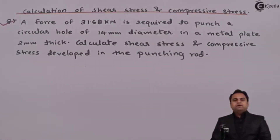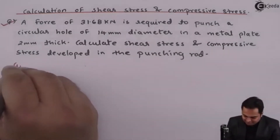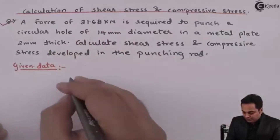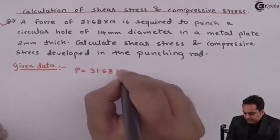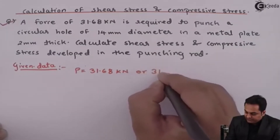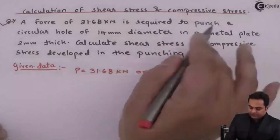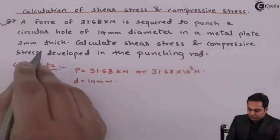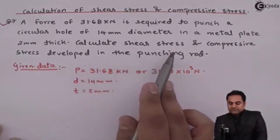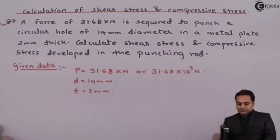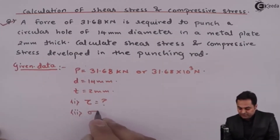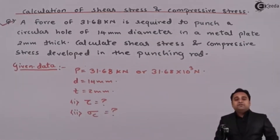Let me write the given data. A force of 31.68 kN — which can also be written in Newtons — is required to punch a circular hole of 14 mm diameter in a metal plate 2 mm thick. We need to calculate shear stress (tau) and compressive stress (sigma suffix C).